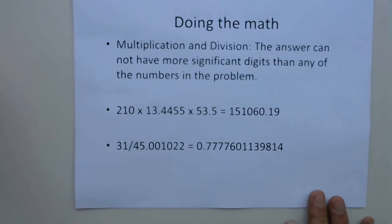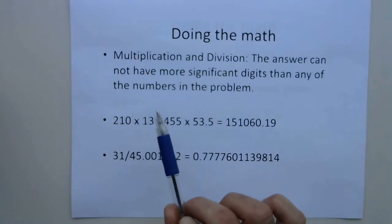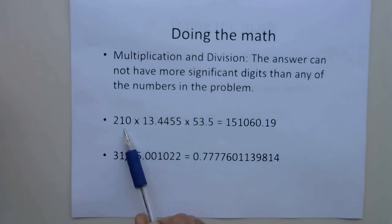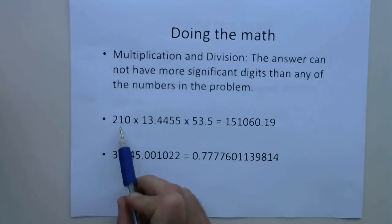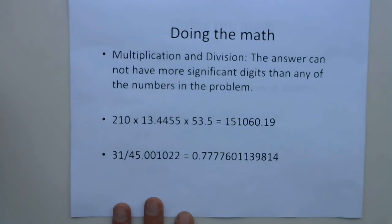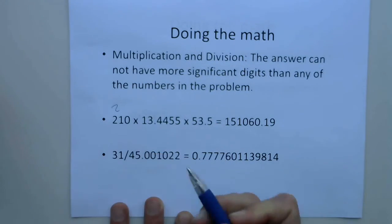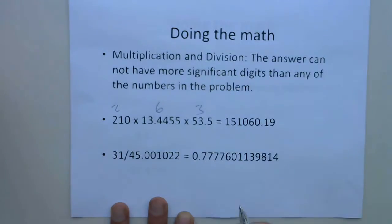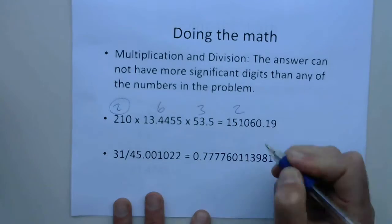So what are we going to do with this? This is useful because when we do calculations in chemistry — maybe multiplication or division — you get a big number on your calculator. How do you know when and where to round off? For multiplication and division, the answer cannot have more significant digits than any of the numbers in the problem. Say we multiplied three numbers together and got a result. We look back at each number: the first has two significant figures, the second has six, and the third has three. The one with the fewest significant figures — two — determines our rounding.